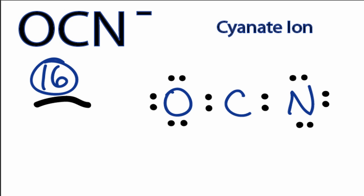We're going to need to share valence electrons from the outer atoms with the carbon so that it can have an octet. The question is, do we share from the oxygen or from the nitrogen, or both?